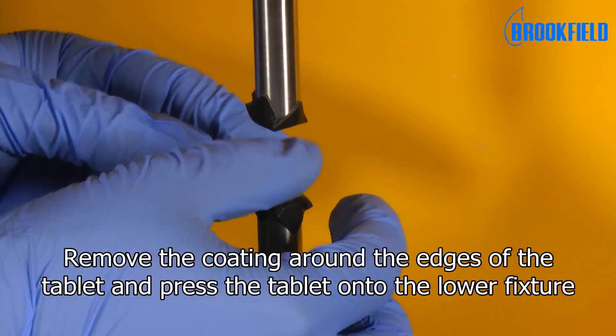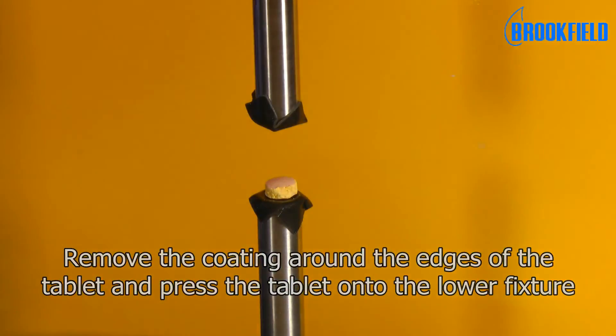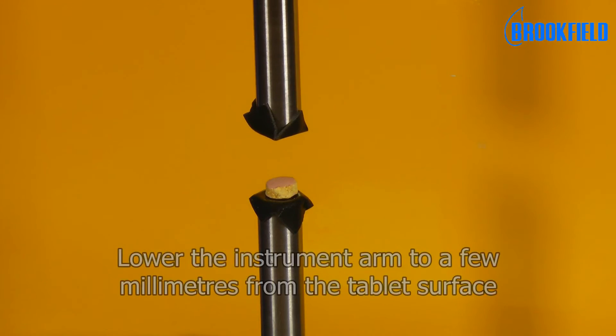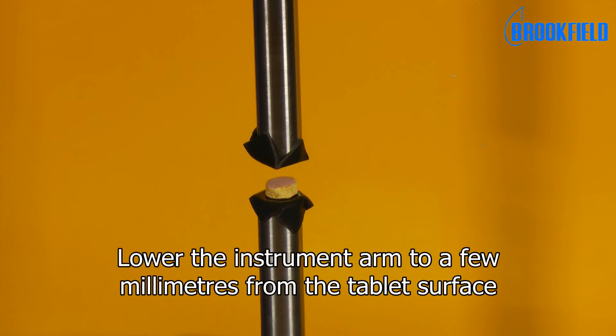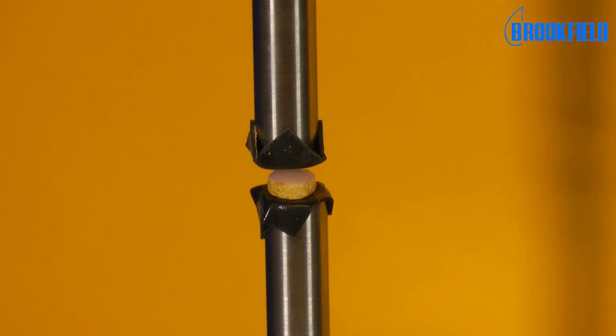Remove the coating around the edges of the tablet and press the tablet onto the lower fixture. Lower the instrument arm to a few millimeters from the tablet surface. The test is now ready to begin.